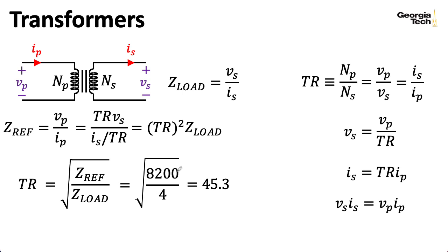And I want to emphasize that this 8.2k is not an intrinsic property of the transformer. It's only meaningful relative to this 4 ohms. If you had an 8 ohm speaker, you would have a 16.4k reflected impedance.